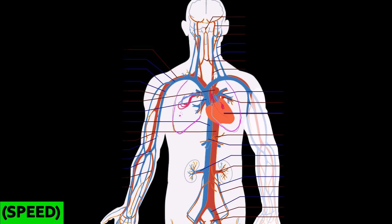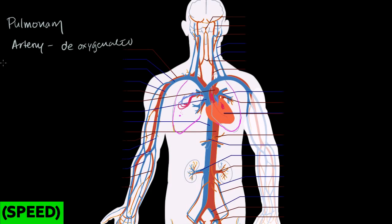This is the interesting thing when talking about pulmonary arteries and veins. The pulmonary artery was blue — as we go away from the heart, we have deoxygenated blood, but it's still called an artery. Then as we go towards the heart from the lungs, we have a vein, but it's oxygenated. So: pulmonary artery — deoxygenated. Pulmonary vein — oxygenated. That's this loop we just traced.